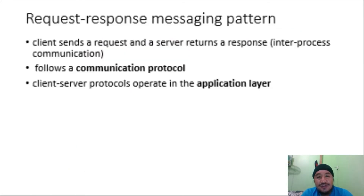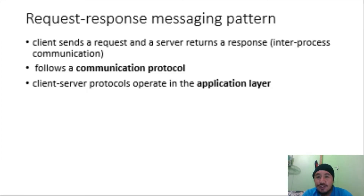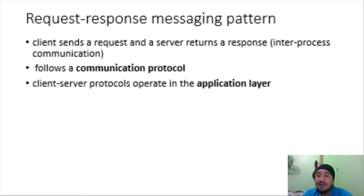In the client-server architecture there is a request and response messaging pattern among the components involved, particularly the server and client. The client sends a request and the server returns a response — we call that inter-process communication. Such communication must follow a communication protocol. The request-response, or request-reply, is one of the basic methods computers use to communicate with each other in a network.